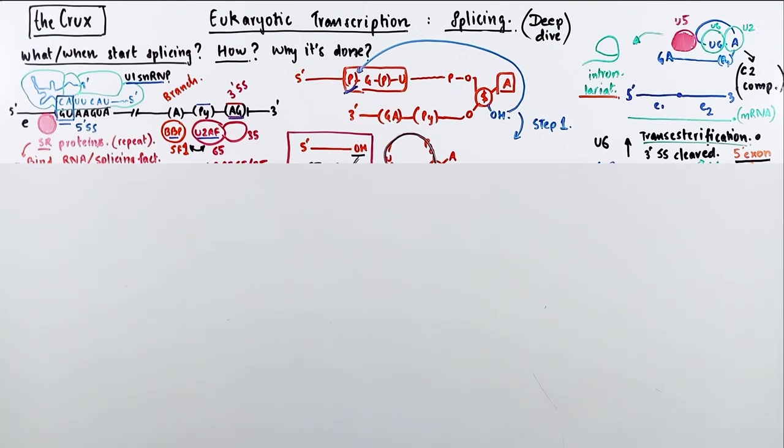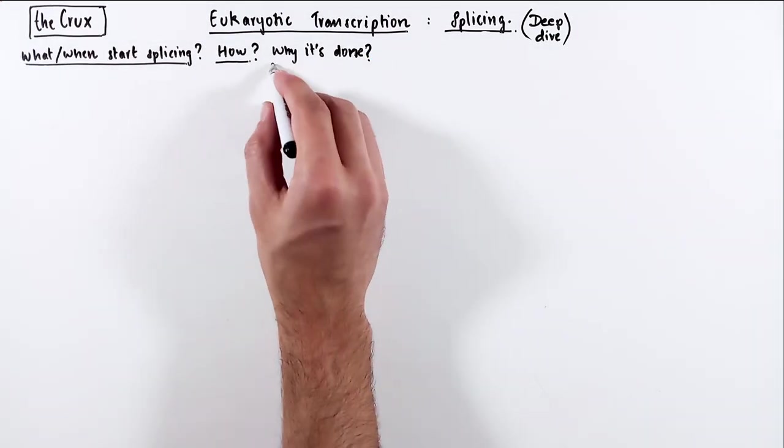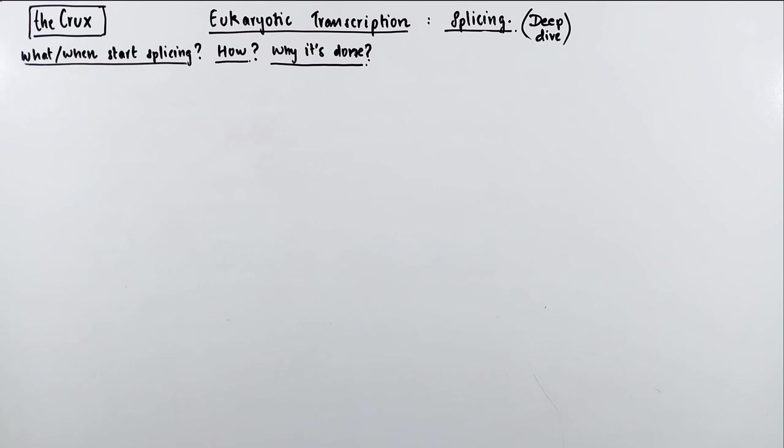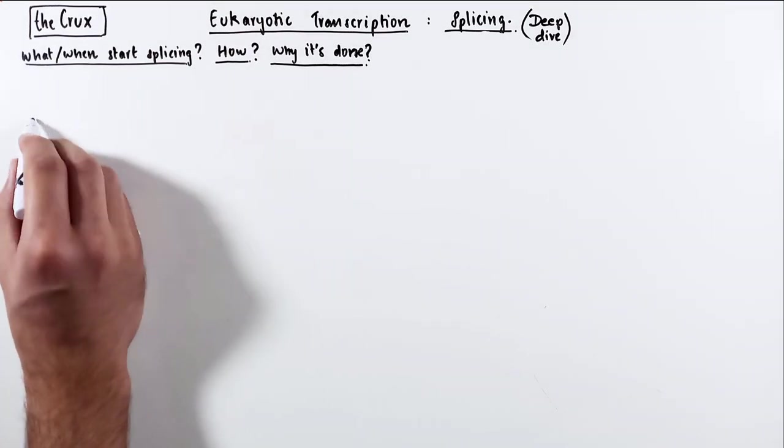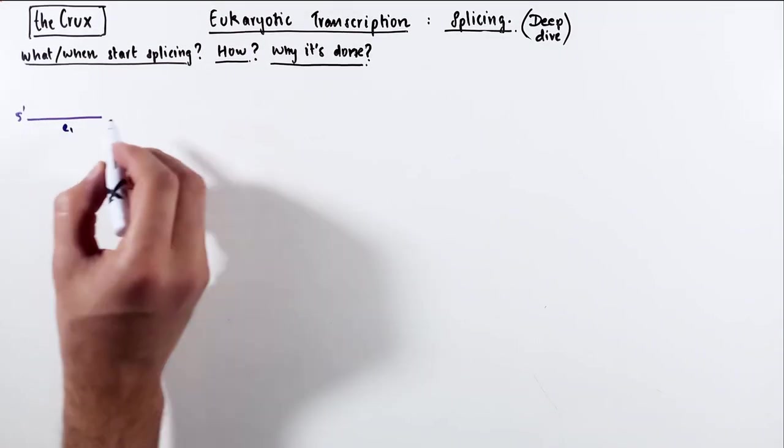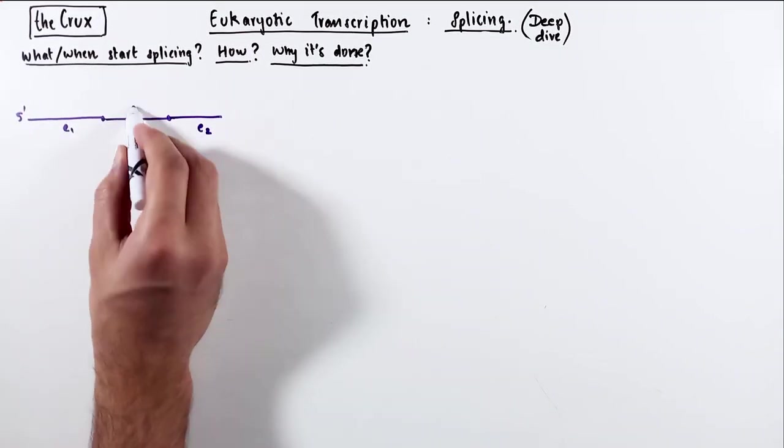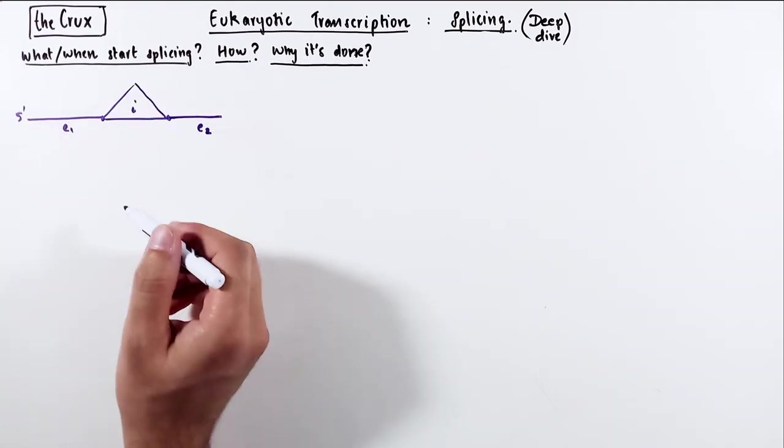Now that you understand when and what starts splicing and how it is done, let's try to look at why splicing is done. At this point, the importance of splicing shouldn't come as a surprise, but let's walk through it. In the simplest case where you have an intron between two exons, the canonical splicing will remove the intron and join the two exons.